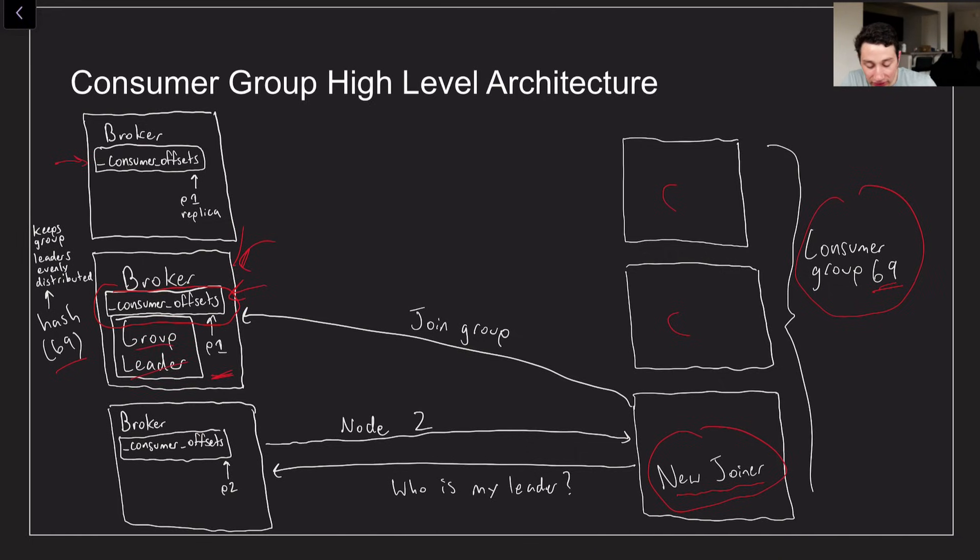You can see also that if this is the partition one of consumer offsets then it's going to have replicas on this broker over here. So this would be the replica partition one on this broker node. So for whatever reason this guy were to go down it could no longer be the group leader. This guy would fail over and be the new group leader.